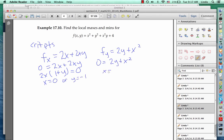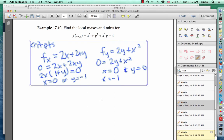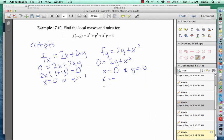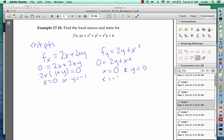So we see that either x equals 0 or y equals negative 1. Plugging into the second equation, if x is 0, we have to have y equals 0. And if y equals negative 1, then we have to have that x is either plus or minus the square root of 2. That gives us three critical points to check.